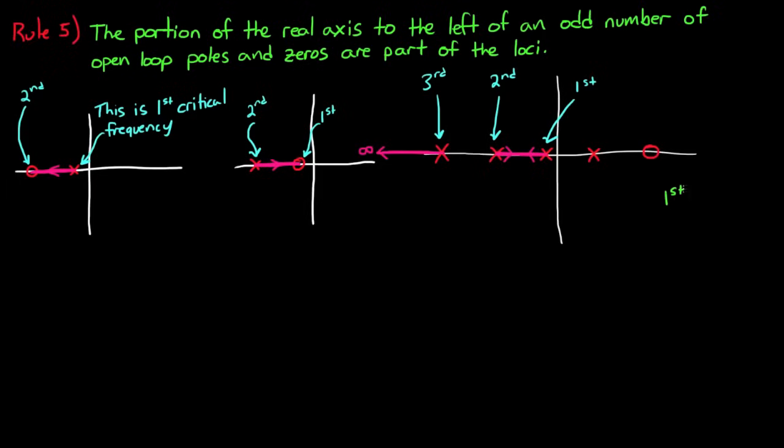Also even if the critical frequencies are in the right half plane, they're still counted from the far right to the left. So you can always just fill in the line to the left of the odd critical frequencies, which would be here in this case.